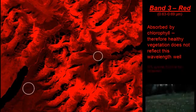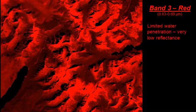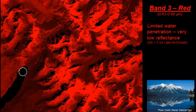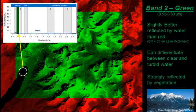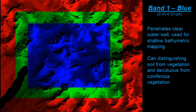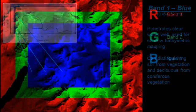Let's take a quick look at the different bands and how they interact with the Earth's surface. Band 3, the red band, is highly absorbed by vegetation because it's used for photosynthesis, and is also absorbed well by water, making water bodies appear fairly dark. Band 2 is slightly better reflected by water than red and can differentiate between clear and turbid water; it is also strongly reflected by vegetation. Band 1, the blue band, can penetrate water fairly well and is sometimes used for bathymetric mapping. It can also distinguish soil from vegetation and deciduous trees from coniferous trees. Blending these three bands together forms a true color composite.